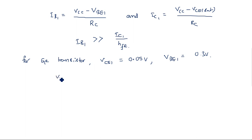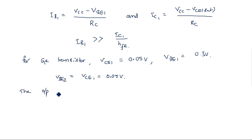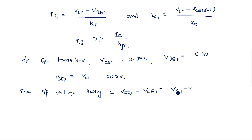VBE2 equals VCE1 equals 0.05 volts — that means a small positive value has appeared at the base of Q2, so Q2 is not fully off and will be conducting slightly. The output voltage swing, which is the maximum excursion, equals VCE2 minus VCE1, which equals VBE1 minus VCE1, that is 0.3 minus 0.05 volts, which equals 0.25 volts.